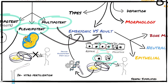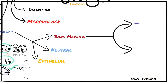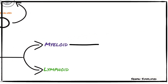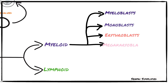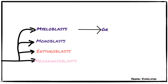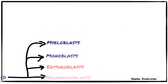In the bone marrow, multipotent stem cells divide into myeloid stem cells and lymphoid stem cells. Myeloid stem cells further divide into four types of cells: myeloblasts, monoblasts, erythroblasts, and megakaryocytes. Myeloblasts give rise to granulocytes, monoblasts give rise to monocytes, erythroblasts give rise to erythrocytes, and megakaryocytes form platelets.